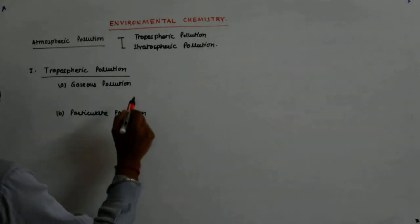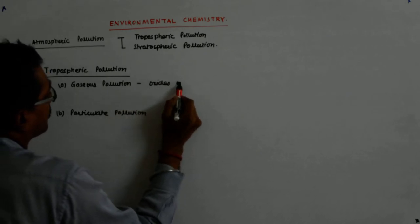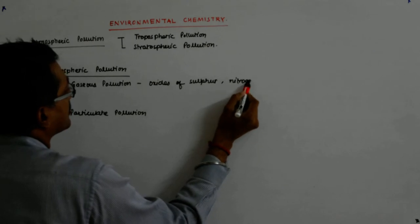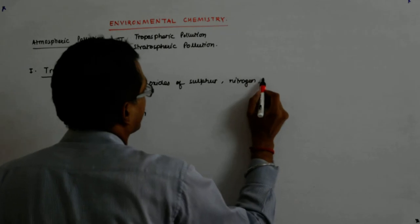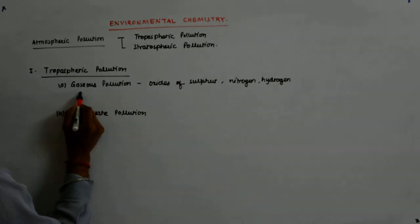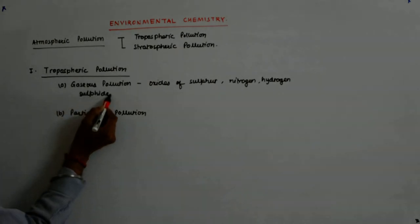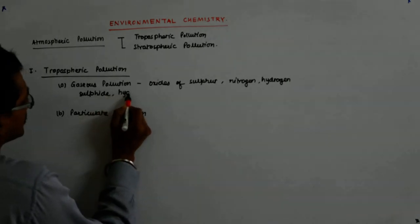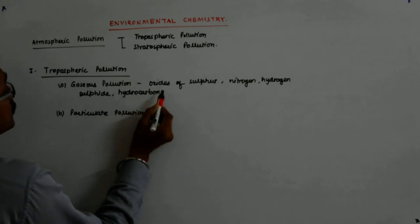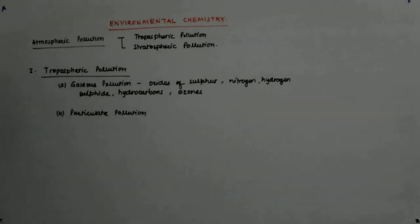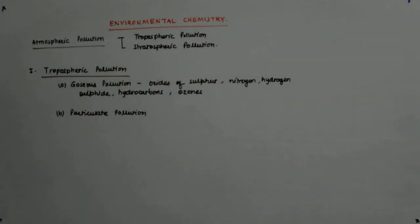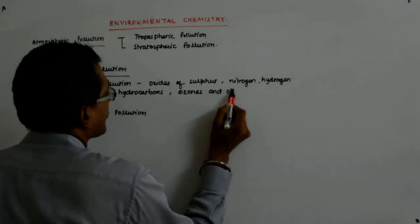In gaseous pollution, we have the oxides of sulfur, nitrogen, hydrogen sulfide, hydrocarbons, ozone, and other oxidants. In stratosphere they are protectors and shielders, but in the troposphere they become pollutants because they are actually toxic beyond a point.